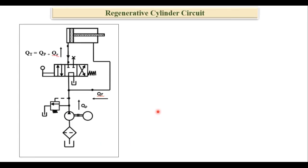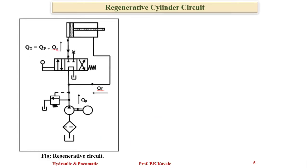Here is a regenerative circuit. Just observe it carefully. What is its purpose? The purpose is to speed up the extending speed of a double-acting cylinder. This is the reservoir, filter, pump, pressure relief valve, four-by-three DCV, and this is a double-acting cylinder.